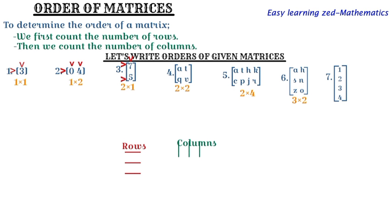Question seven: this matrix has one, two, three, four elements arranged vertically, giving four rows — the first row has one, the second has two, the third has three, and the fourth has four. Counting columns, there is only one column. So this matrix has the order four by one.